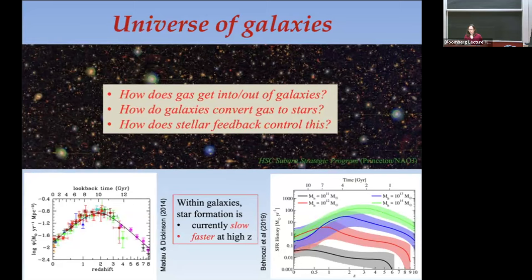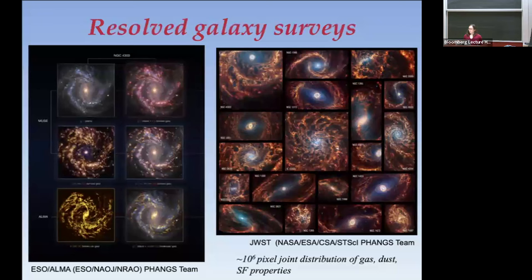Star formation is currently slow — I'll explain what I mean by slow — and it was faster at high redshift, both in the sense that the star formation rate was higher and the specific star formation rate per unit gas mass was also higher. As recently as a hundred years ago it wasn't even known that there were other galaxies beyond our own. Now we know observationally a great deal, especially from local galaxies, but increasingly from more distant galaxies. Surveys are now at much higher resolution — about 100 parsec scale versus kiloparsec scale.